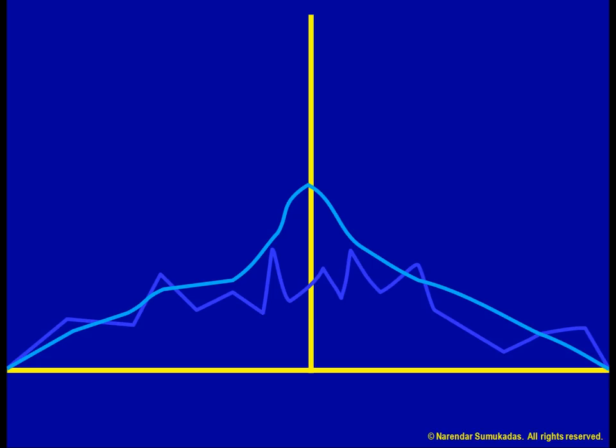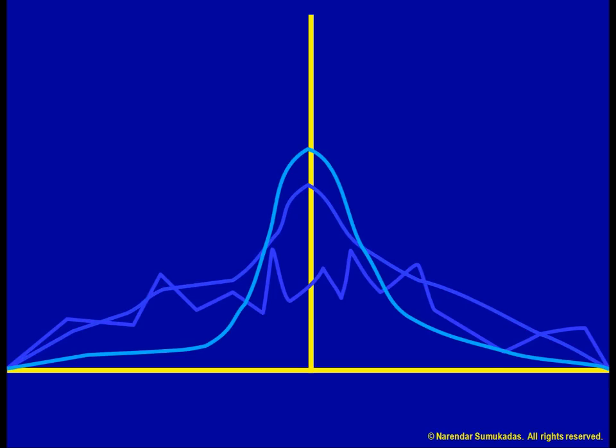Suppose I increased my sample size to 20 observations. The distribution of the sample means will look quite a lot like the normal distribution.